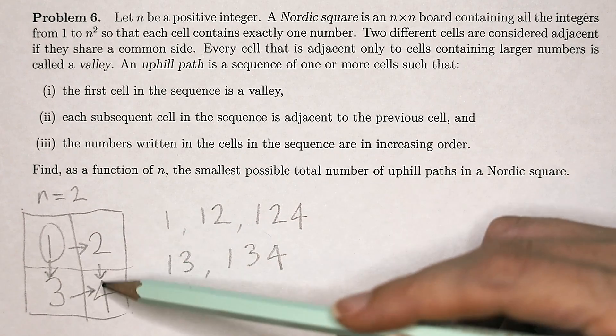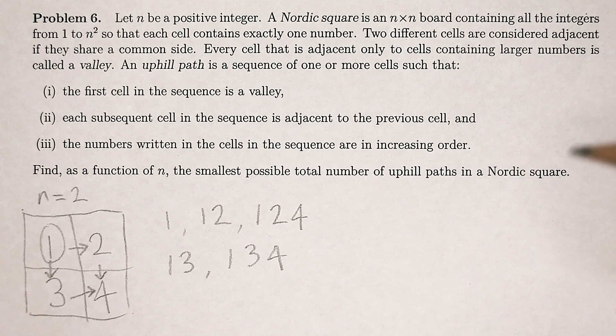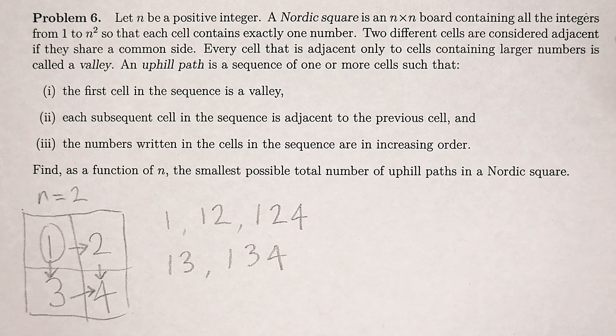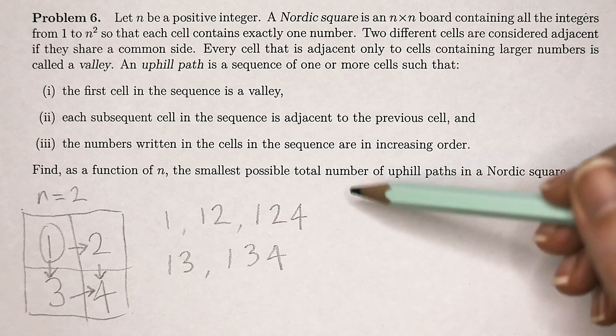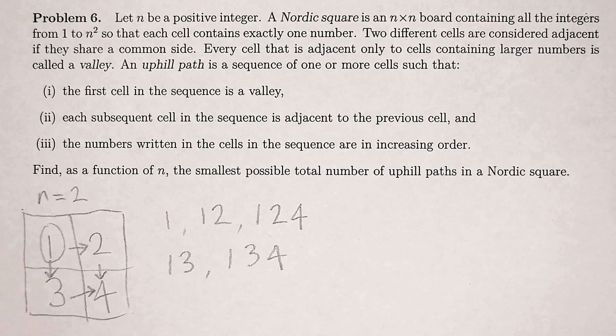It didn't have to be in this pattern. It could have gone 1, 2, 3, 4. And in fact, you should play around with it now, trying Nordic squares of different sizes and different arrangements of the numbers to see what kinds of patterns might give you the smallest number of total uphill paths. If you want to try it for yourself, now is your time to pause.